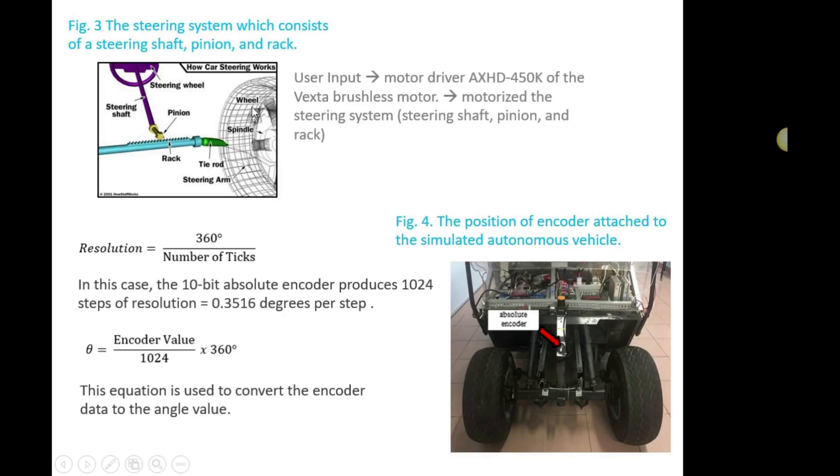This is the structure of the steering system in the vehicle. The steering system is composed of the steering shaft, rack and pinion. The movement of the pinion caused by the steering input causes the turn of the tire according to the movement of the rack.